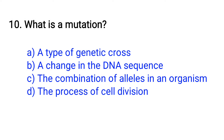Question number 10. What is a mutation? Option A: A type of genetic cross, B: A change in the DNA sequence, C: The combination of alleles in an organism, D: The process of cell division. The right answer is Option B: A change in the DNA sequence.